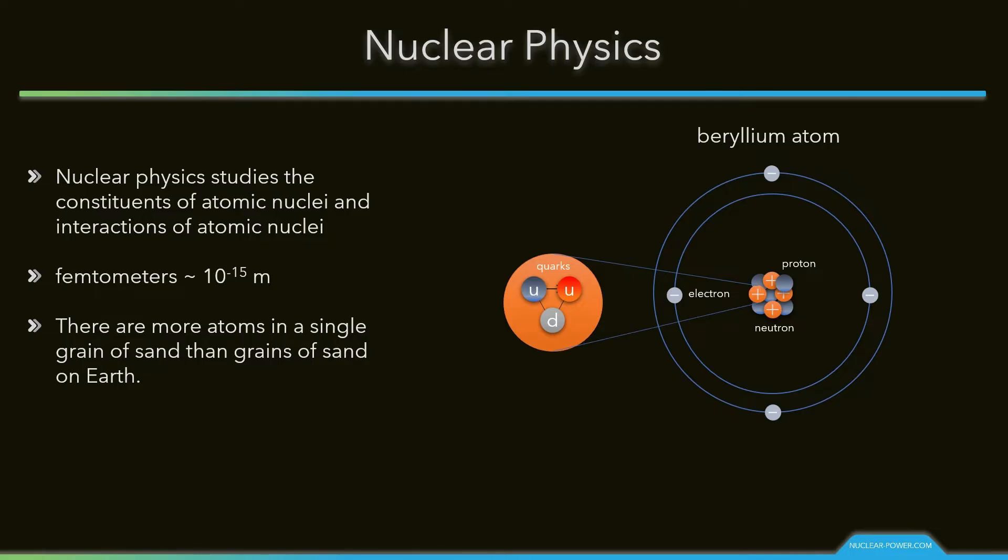Within the nucleus, protons and neutrons are bound together through a residual strong force. Protons and neutrons also have their structure. Inside the protons and neutrons we find true elementary particles called quarks. The proton is composed of two up quarks and one down quark.